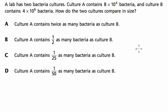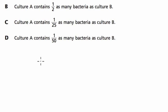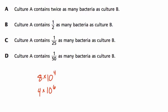Well, before I even read the choices here, I'm going to solve it myself. So we have 8 times 10 to the 4th and 4 times 10 to the 6th. We could subtract these two. However, I guess I did glance at the choices, and if we look at the phrasing, culture A contains twice as many bacteria as culture B. They all have phrasing like that, and that phrasing tells me we're dividing.